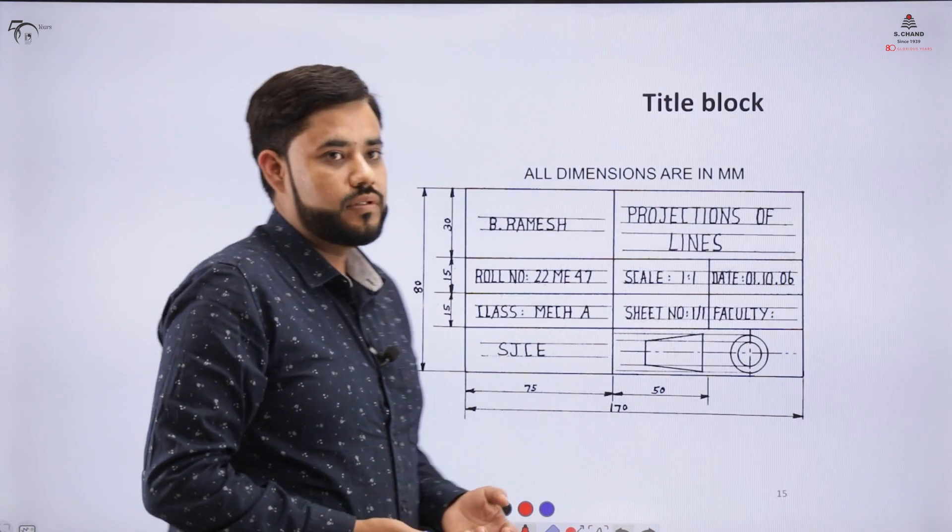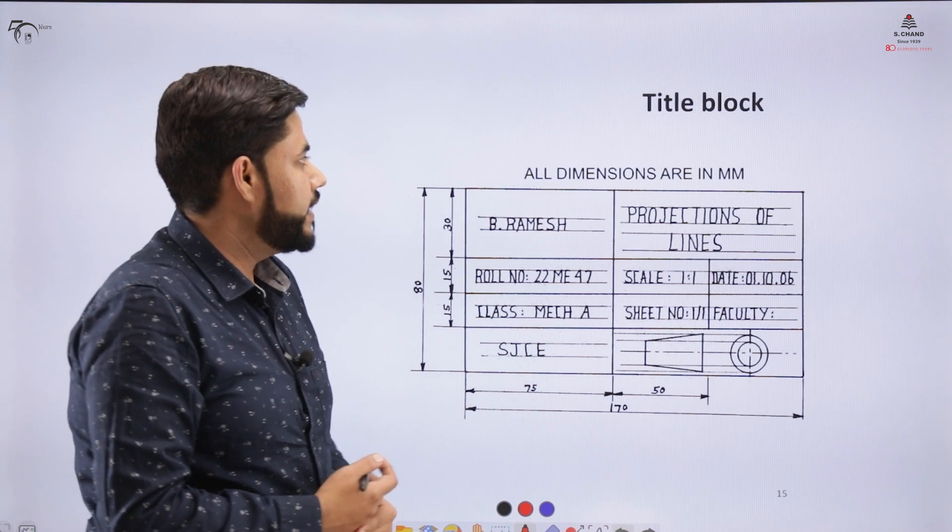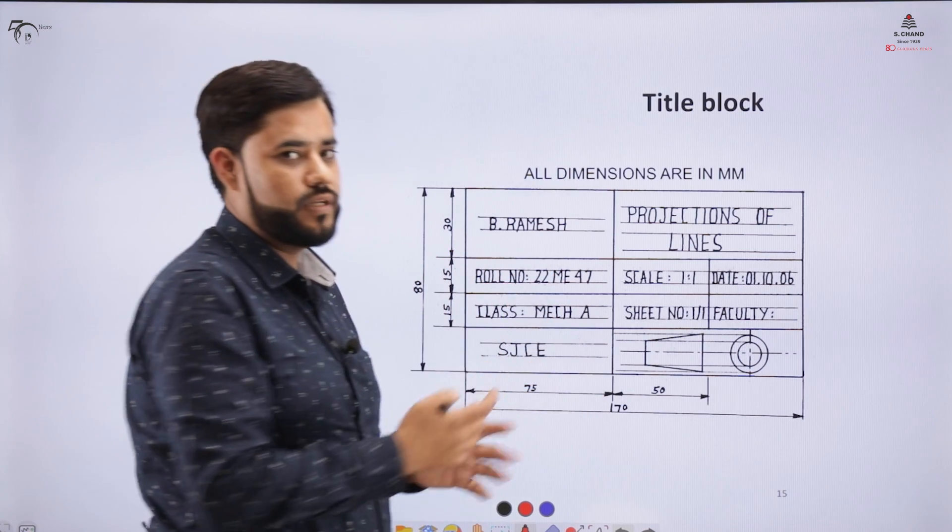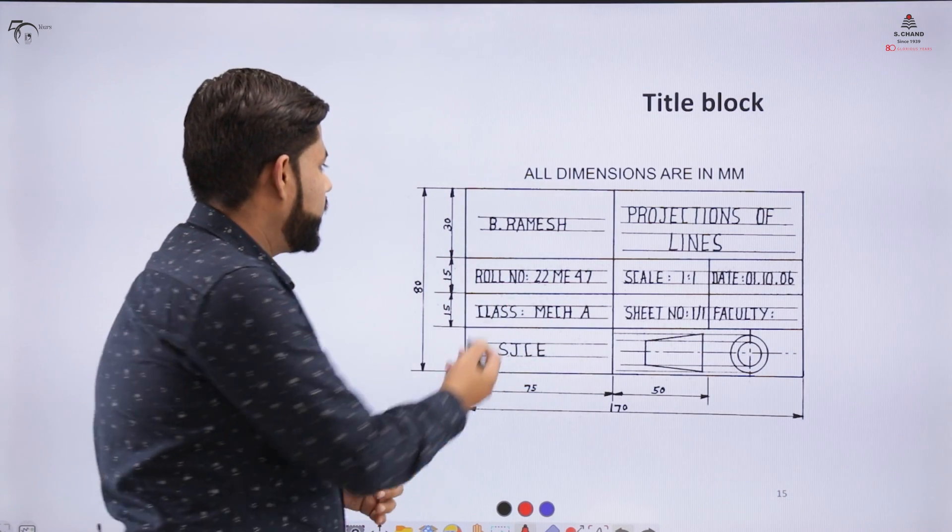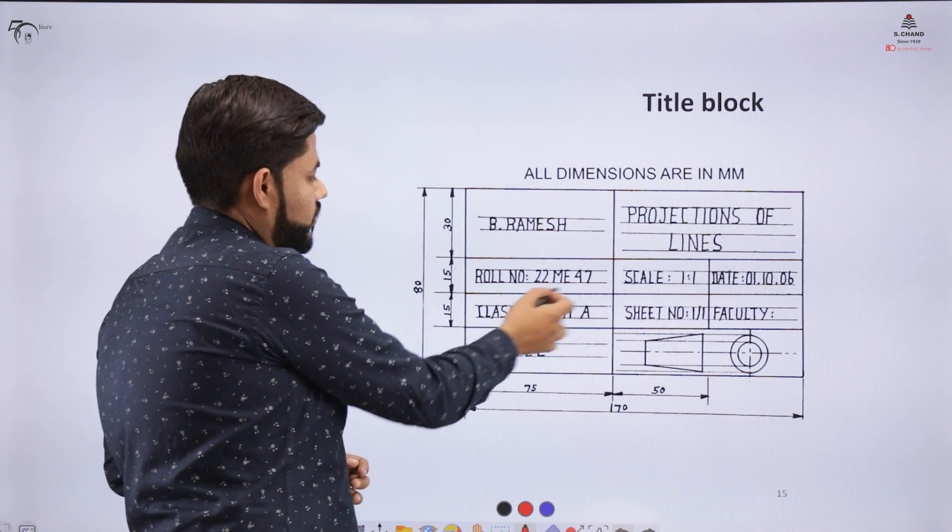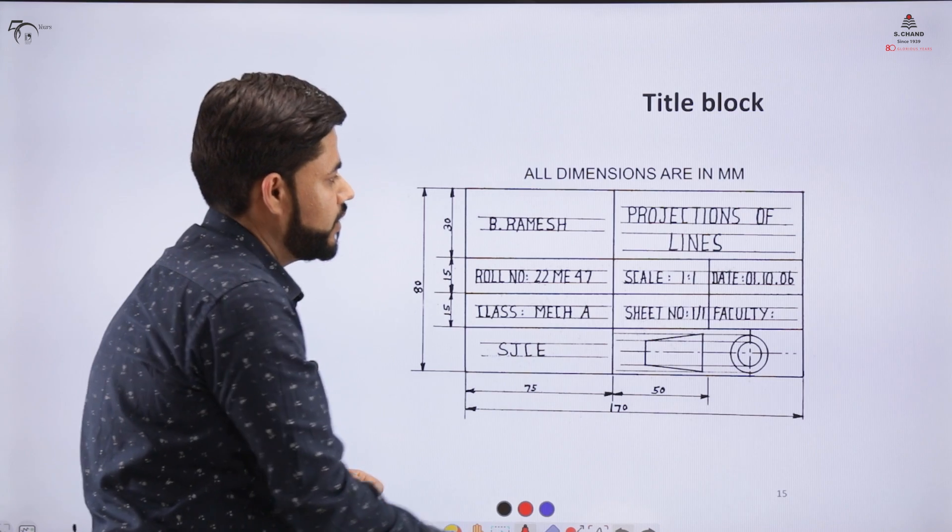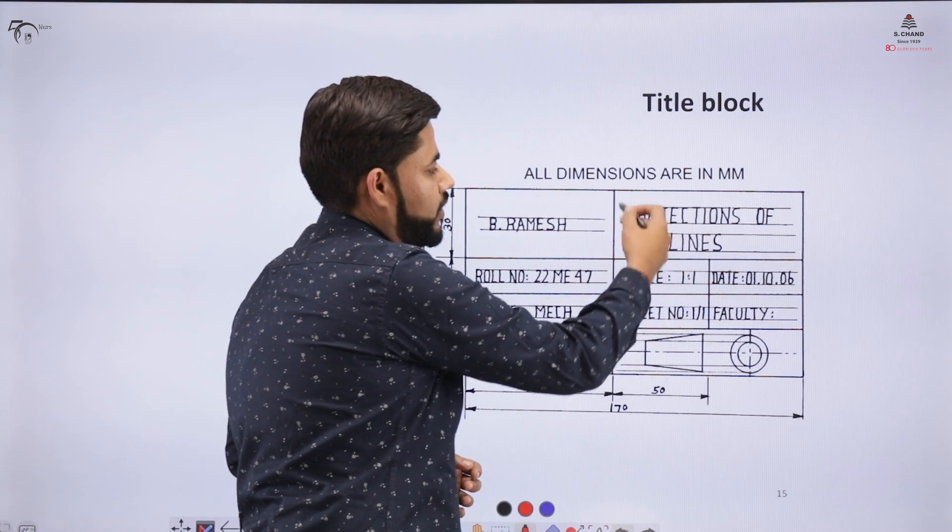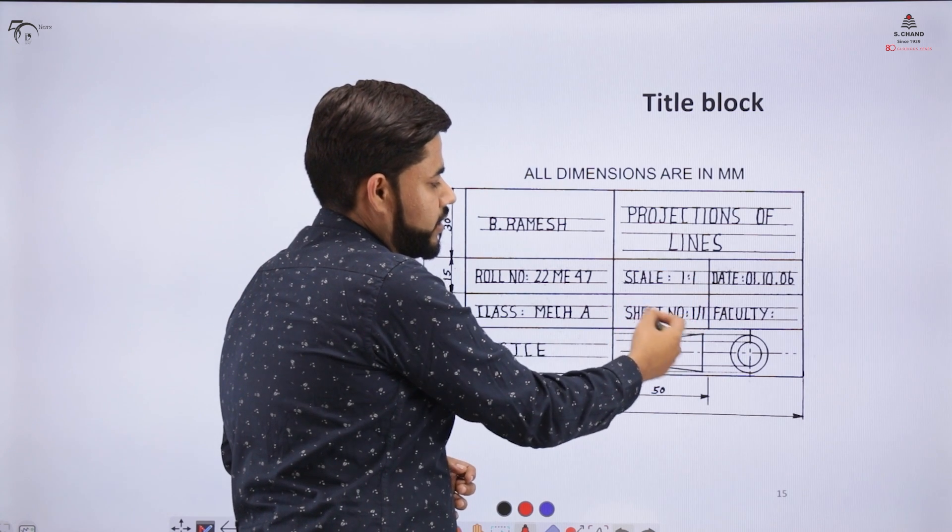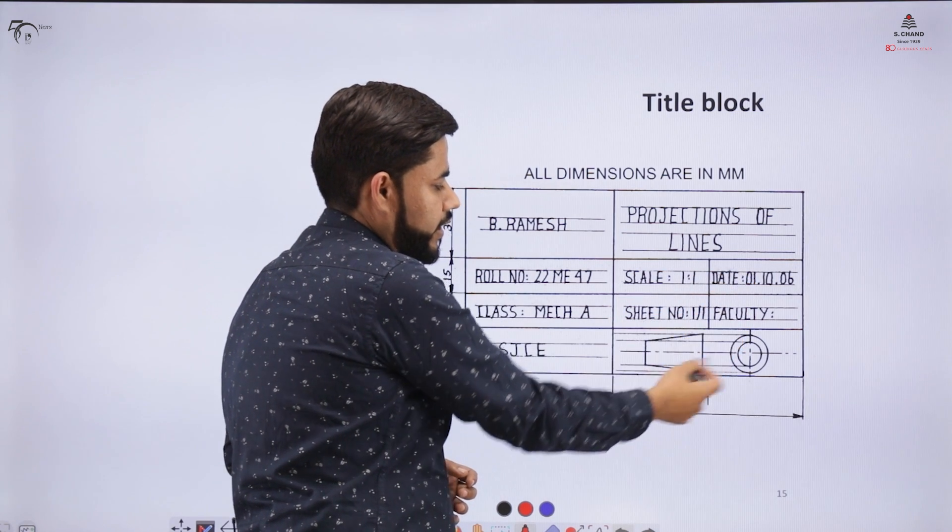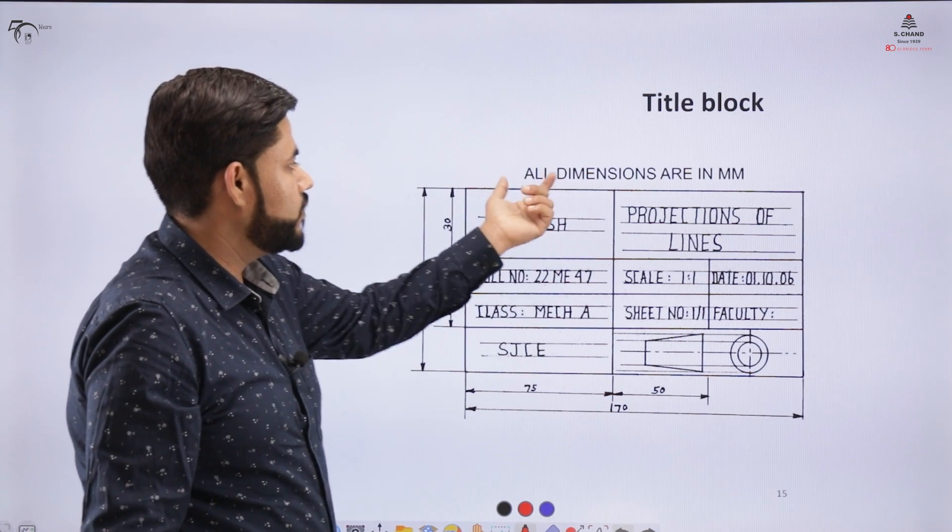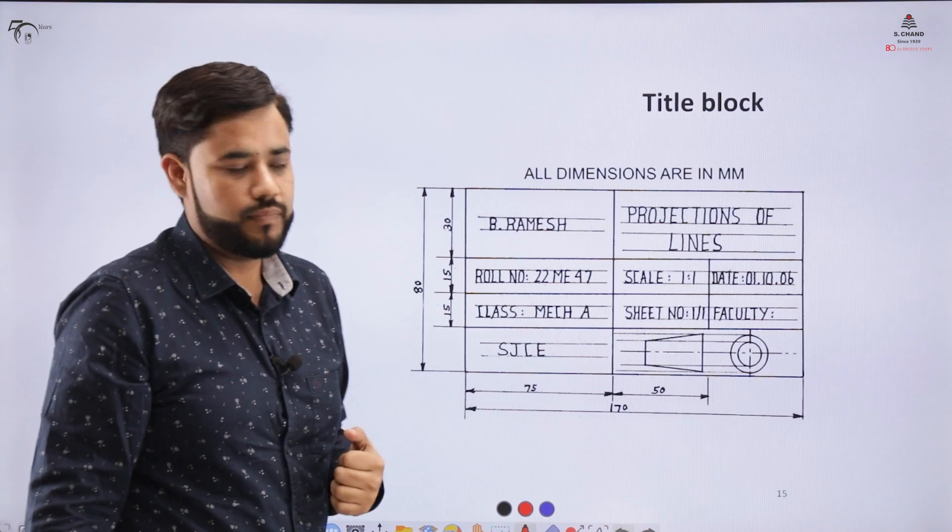Then the important thing is the title block. The title block consists of certain information about the student making the drawing: this is the region where you write your name, your roll number, your class and the name of your college. Also the title of the sheet, scale, sheet number, the faculty check, date and one symbol. It has a particular size and above it would be written that all dimensions are in M.